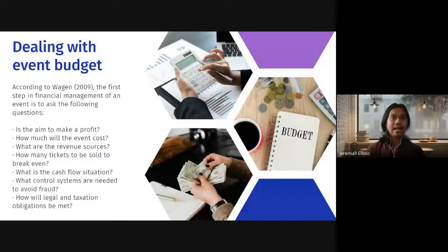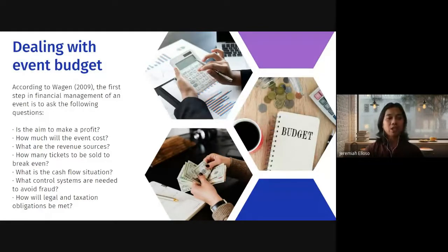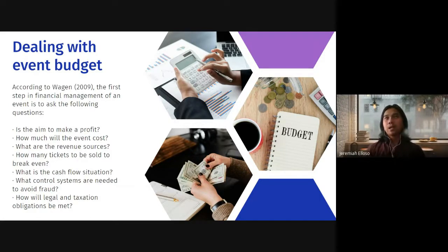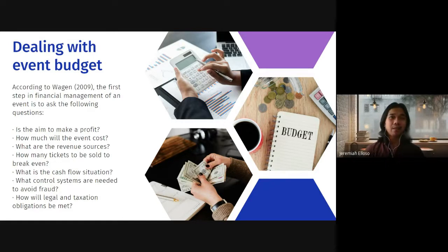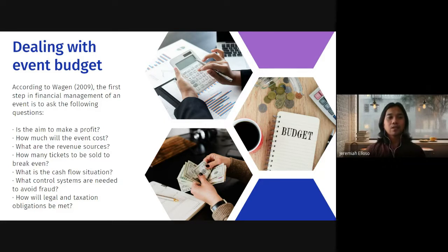We are nearing the last phase of this module — the topic of budget. According to Wagen 2009, the first step in financial management of an event is to ask the following questions: Is the aim to make a profit? Not all events aim for profit — social events like birthdays and weddings do not aim to create profit, but business-related events may have the ultimate goal of earning profit and selling products. The first step in dealing with an event budget is to know your objectives.